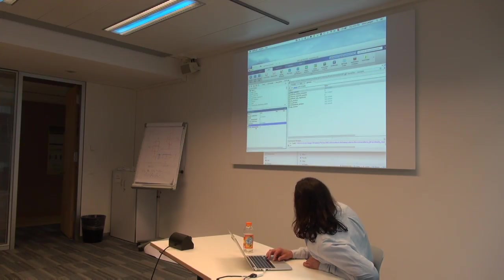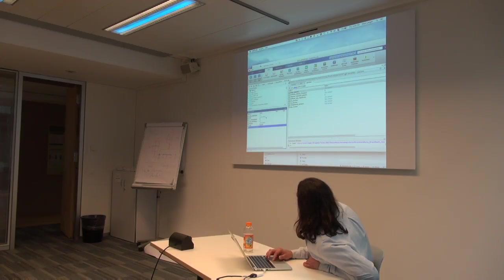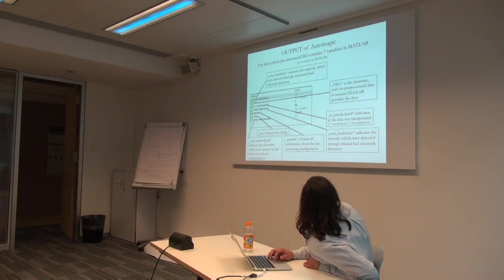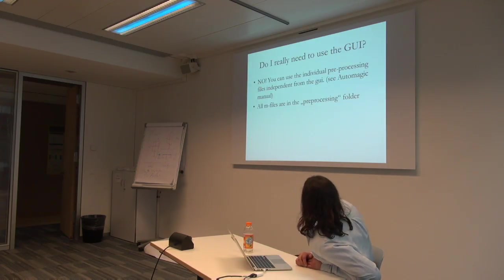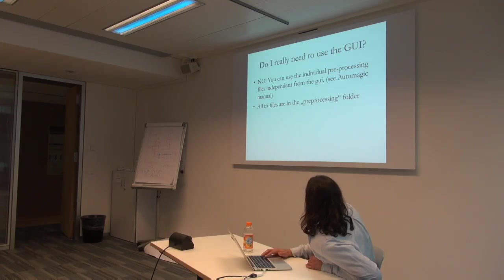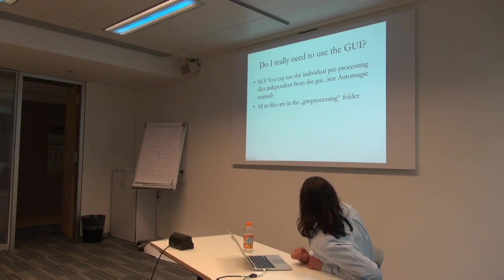The output also stores the data quality rating and, if not yet interpolated, which electrodes need interpolation. You don't need to use the GUI — you can use the individual pre-processing functions in MATLAB, doing each step individually. Automagic will also become an EEGLAB plugin. Individual .m files for each pre-processing step are in the pre-processing folder. A freely available dataset with EEG and eye-tracking data across many paradigms is also published for those wanting data to practice with.